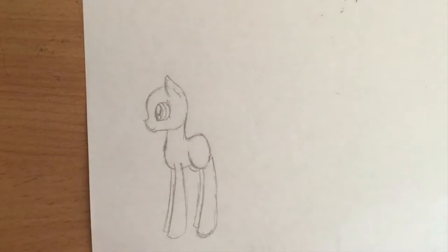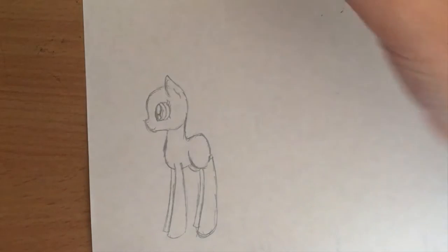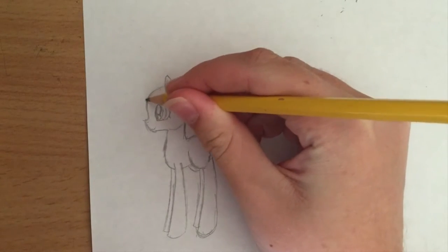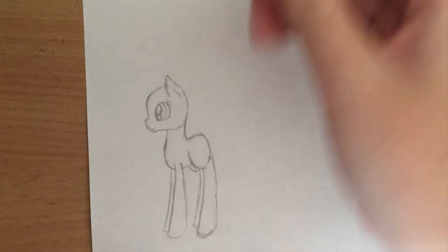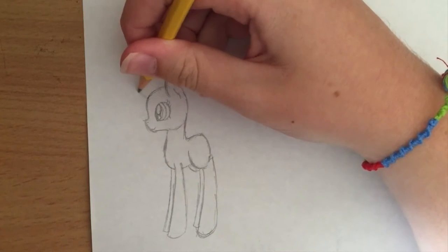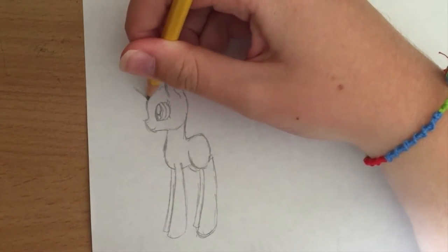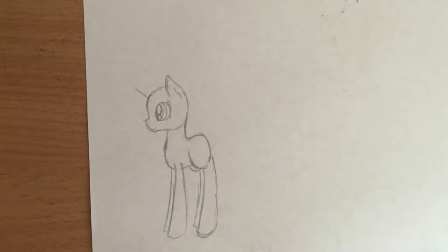Okay, so here we have a regular pony base facing sideways profile, and first let's do a horn. On the forehead, about halfway down to here, you're going to want to make a triangle. It depends on how long you want the horn to be.